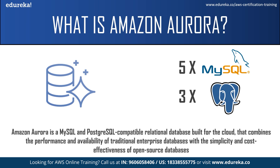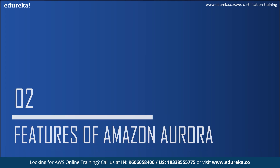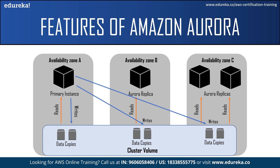Now let us understand what an Amazon Aurora DB cluster is. An Amazon Aurora DB cluster consists of one or more DB instances and a cluster volume that manages the data for those DB instances. A DB instance is an isolated database environment running in the cloud, and a cluster volume is a virtual database storage volume that spans multiple availability zones, with each availability zone having a copy of the DB cluster data.